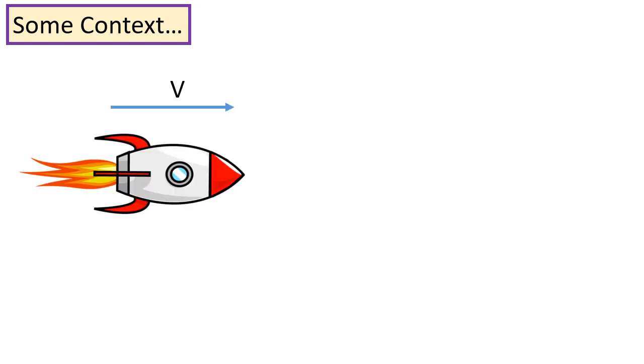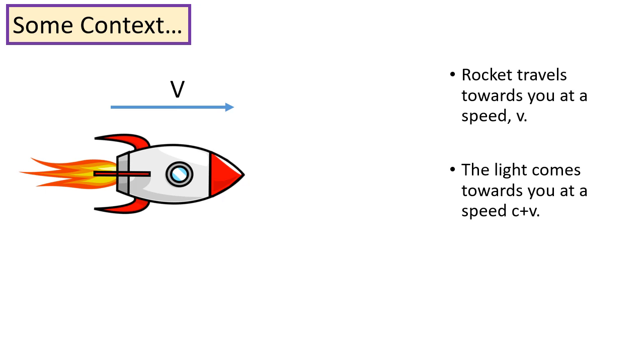For example, imagine a rocket comes towards you at a speed v. The light from that rocket should therefore come towards you at a speed c, plus v. The speed of the rocket, plus the speed of the light.